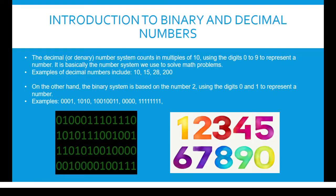The decimal or denary number system counts in multiples of 10, using the digits 0 to 9 to represent a number. It is basically the number system we use to solve math problems and the numbers we use in our daily lives. On the other hand, the binary system is based on the number 2, using the digits 0 and 1 to represent a number.